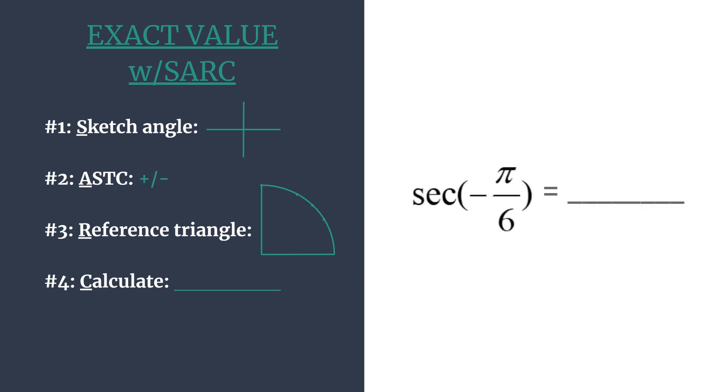So we're going to use this to find the secant of negative pi over six. Let's first sketch our angle. The negative in front of the angle simply means that we are rotating in the clockwise direction.